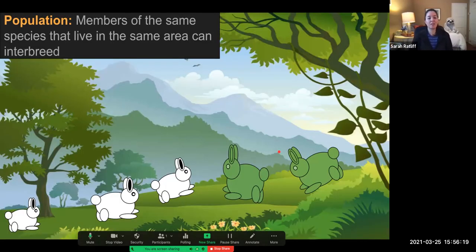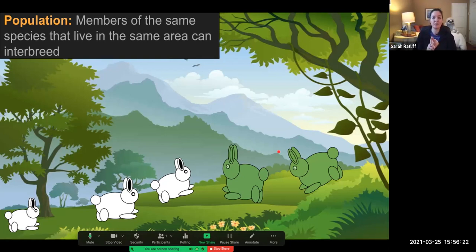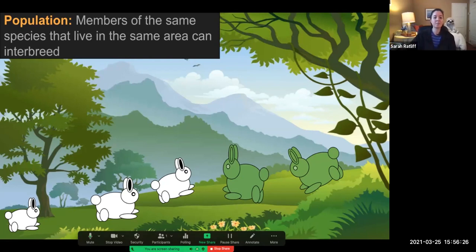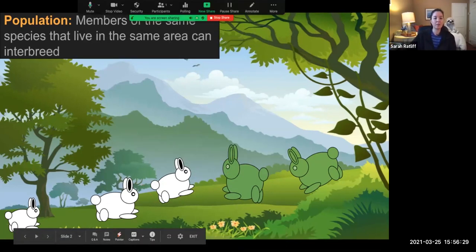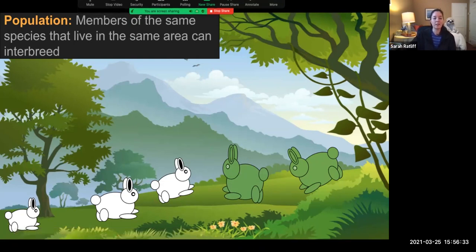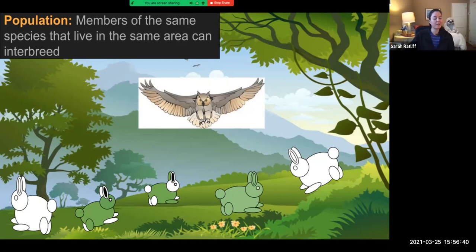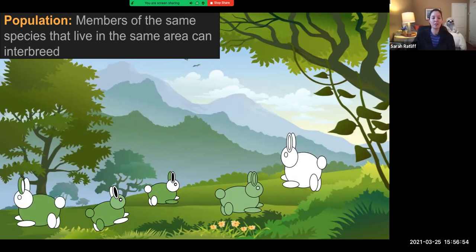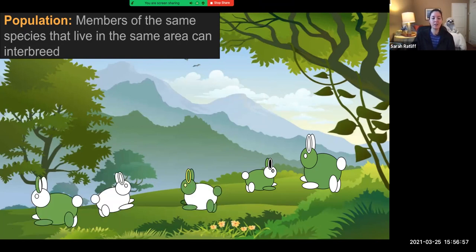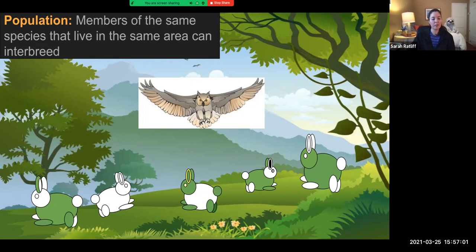First up here we have a population of bunnies. Population, remember, is the same species in the same area and they can interbreed. Now with our bunnies here, they're going to go ahead and populate, interbreed, mix up those genes a little bit, and here comes our favorite predator, the owl. The owl is going to, as we know, pick on those bunnies that stand out. Those green camouflage ones are going to stay very happy and alive. They're going to pass on their genes and continue to interbreed. Now it's going to keep going through the generations until once again our friend the owl is hungry. They're going to pick on a brand new rabbit to choose, and lo and behold we have an all white one. It's most likely going to grab that one for lunch.